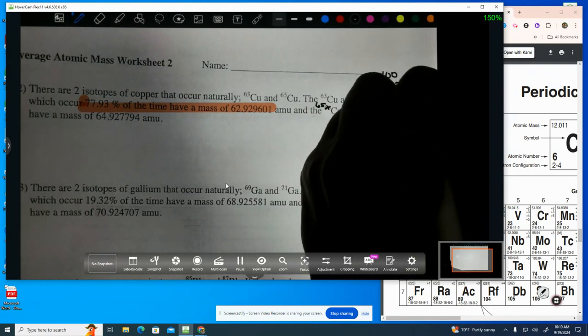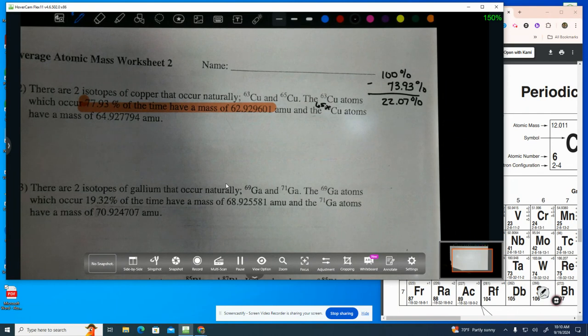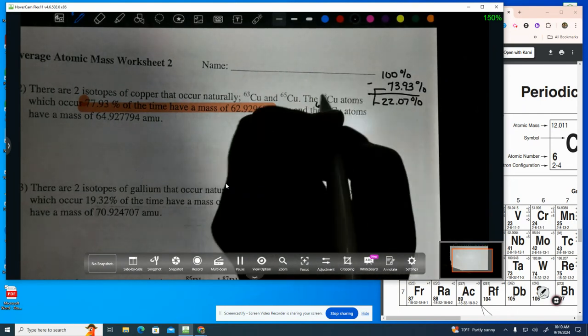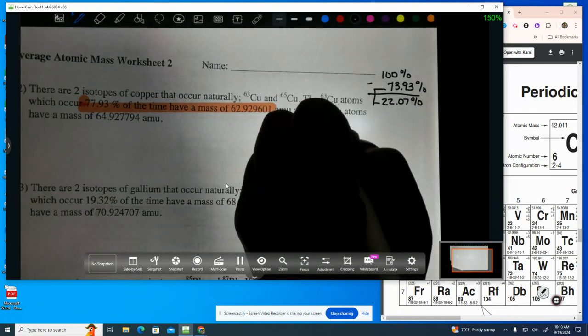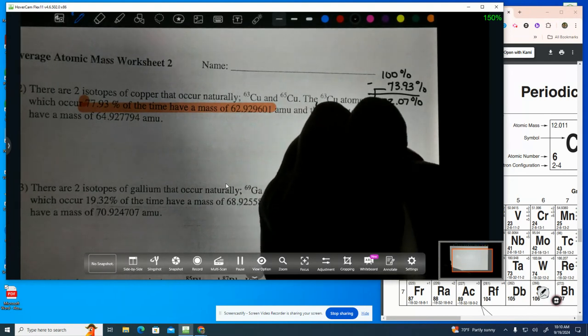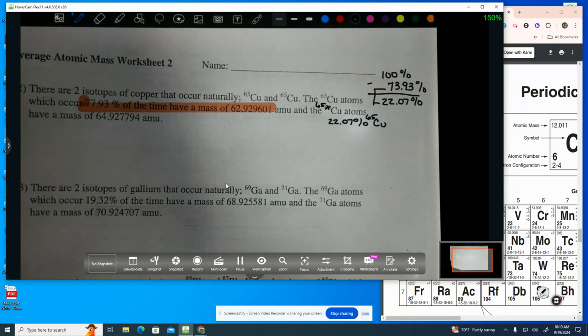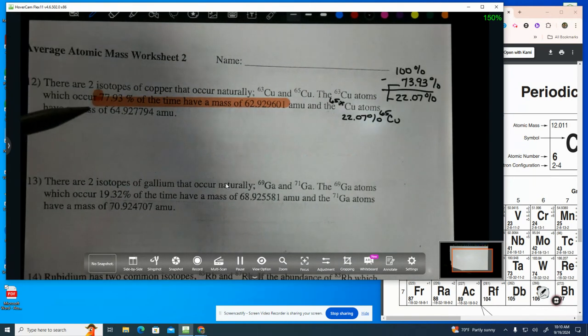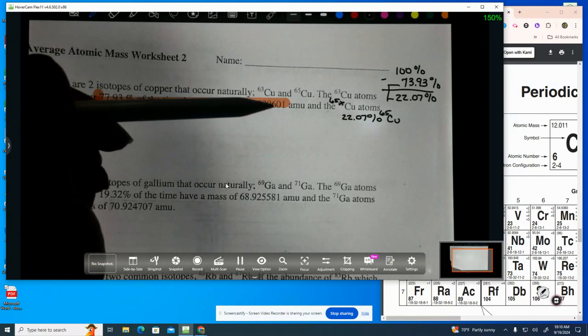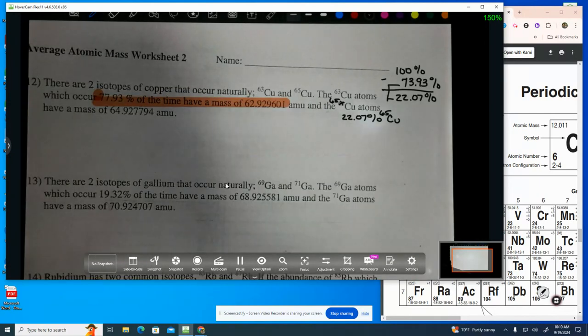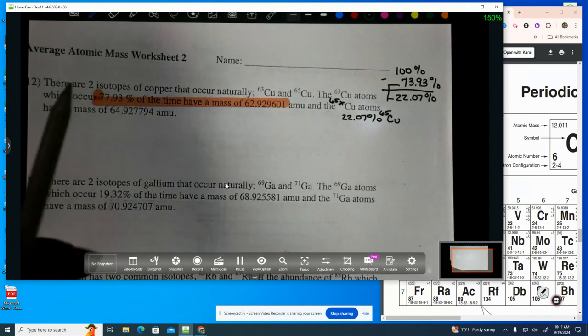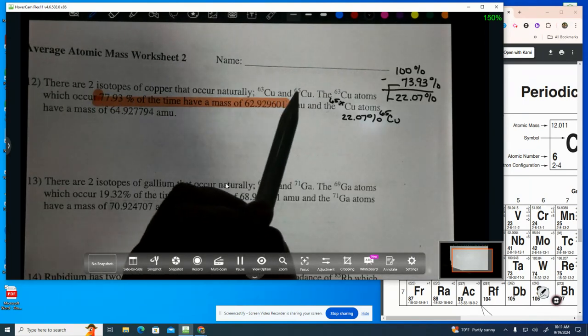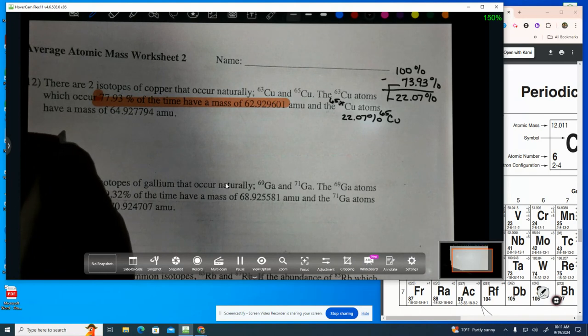Because remember that they always have to add to 100%, these two numbers. So this is going to be 22.07% of the copper 65s. Now, before we do any math, some of you have this done, what is my average going to be closer to? Is it going to be closer to 63, or is it going to be closer to 65? 63, because 77.9% of the time, I have copper 63. So now, let's do it.